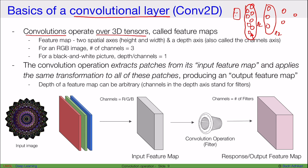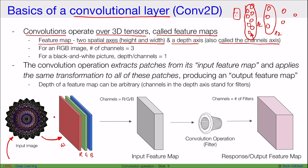Convolutions operate over 3D tensors called feature maps. When talking about images, we use 2D convolutions, so they require 3D tensors as input. A feature map is a 3D tensor with two spatial axes — height and width — and a depth axis also known as the channels axis. From an image, we can obtain red, green, and blue channels, giving the image width, height, and depth.